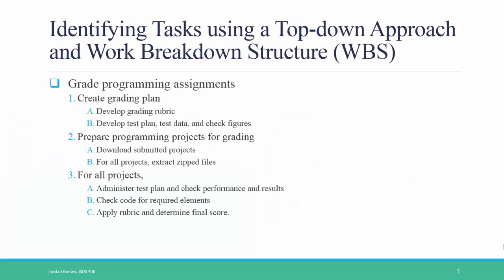Scheduling a project works best when you first identify the tasks you need to complete and then organize them in a top-down approach using a work breakdown structure. A work breakdown structure is essentially an outline of all the tasks that need to be done, organized in different levels. For example, if the project is to grade some programming assignments, you can break it down into: 1. creating the grading plan, 2. preparing the projects for grading, and 3. doing the actual grading. Under each of those three steps, you list the specific tasks needed. After the work breakdown structure is created, you can start assigning time, people, and resources to these tasks to create a more detailed project work plan.